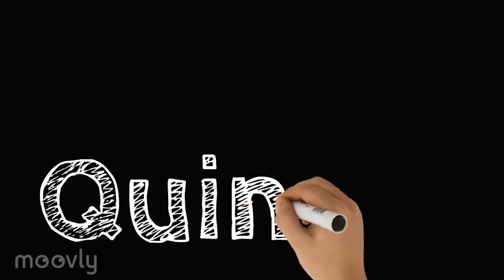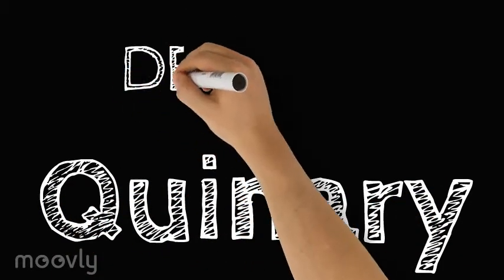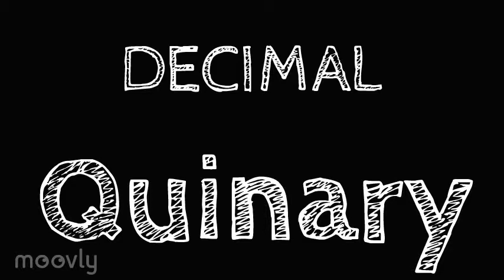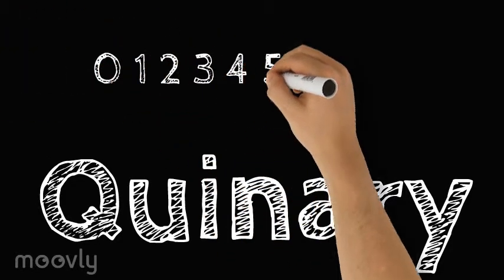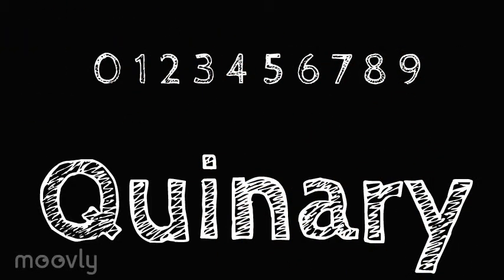So, what exactly is the Quinary System? All of us are familiar with the decimal base, also known as base 10, which consists of the numbers 0 to 9. The Quinary System is similar, just that in this system, we use the numbers 0, 1, 2, 3 and 4. Note that there are 5 numbers as this is a base 5 system.